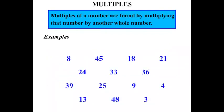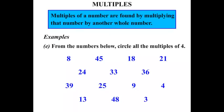Now here we have a group of numbers, and it says: from the numbers below, circle all the multiples of 4. Let's look at each one at a time. 8 — the way I think about it is, does 4 go into 8? Well, yes it does. So it would be a multiple of 4. 8 is a multiple of 4.